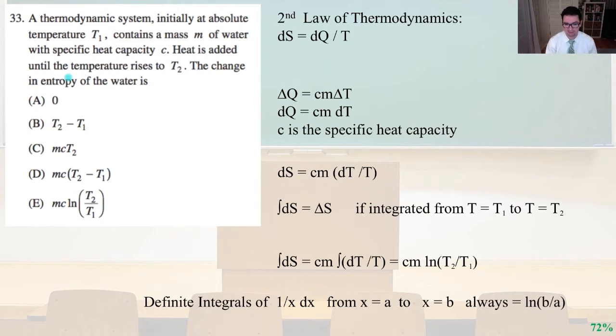So the integral of that, integral of dS equals the change in S if we're integrating from T equals T1 to T equals T2. So the integral of dS equals Cm times the integral of dT over T equals Cm ln T2 over T1. Now we have to know that definite integrals of 1 over x dx from x equals A to x equals B always equals ln B over A. So that leads us to answer E.